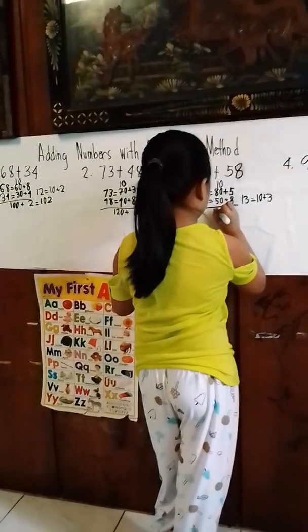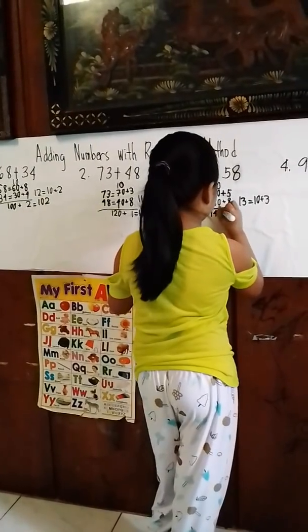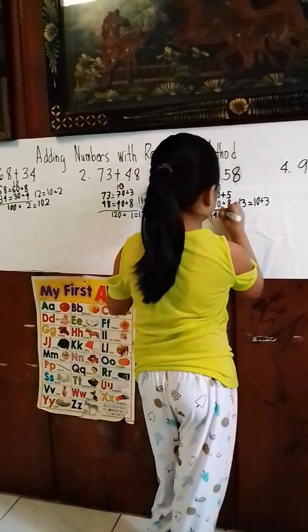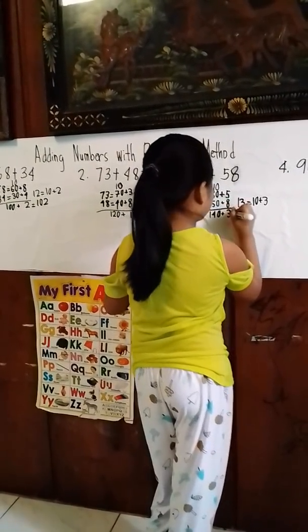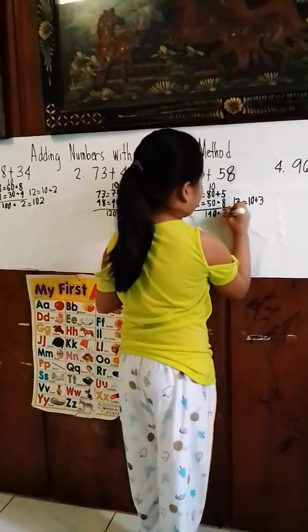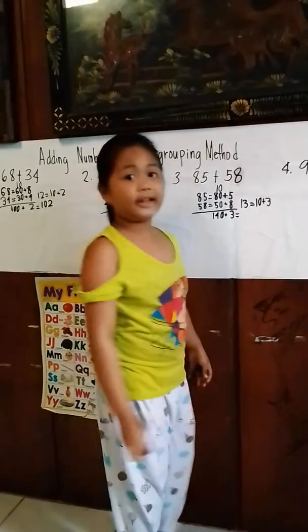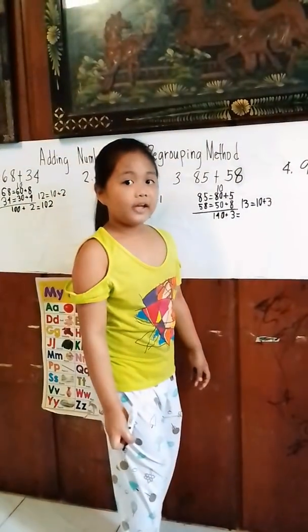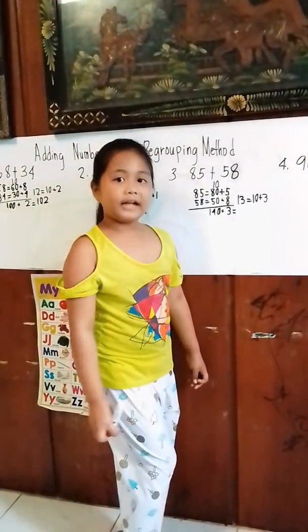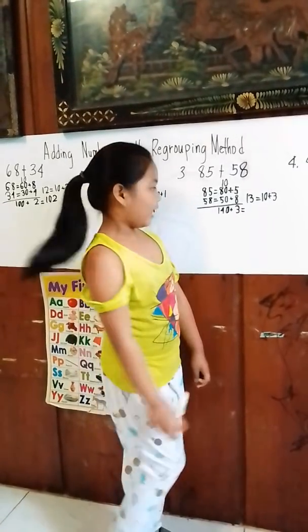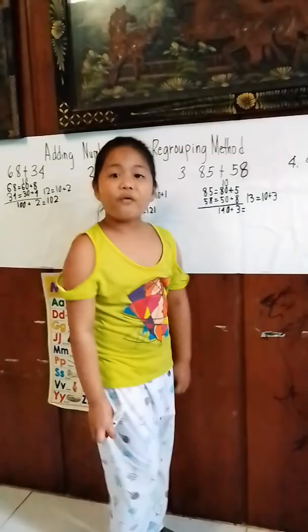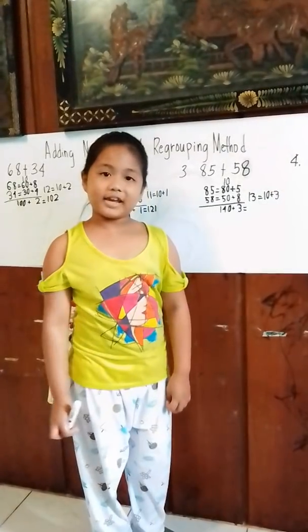90 plus 50 equals 140. 140 plus 3 equals 143. The answer is 143.